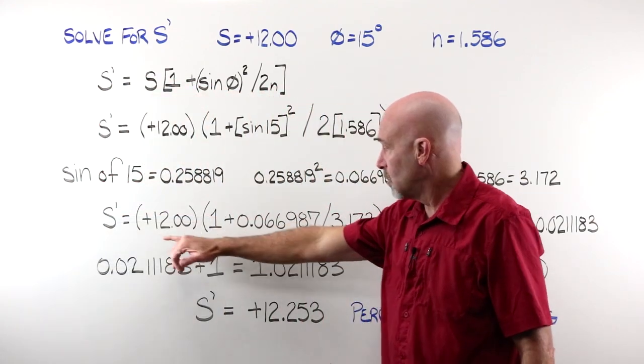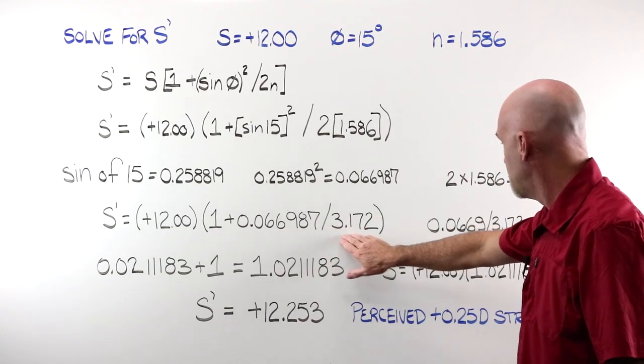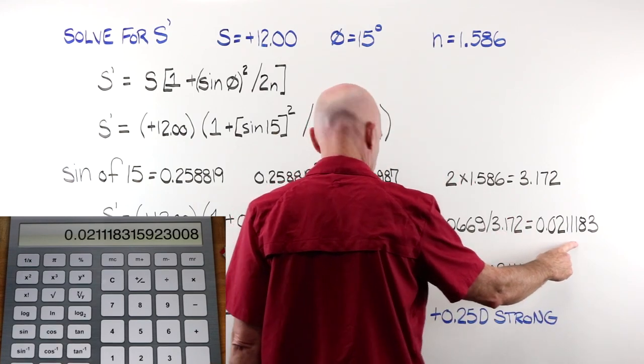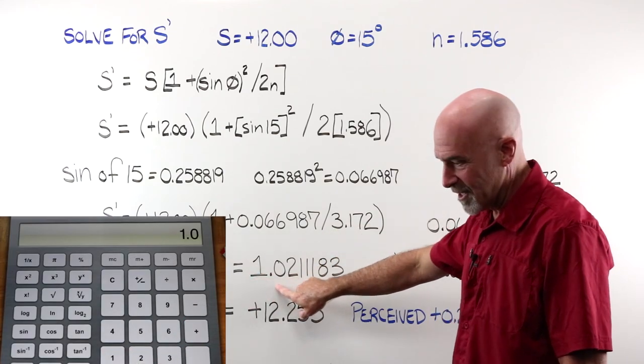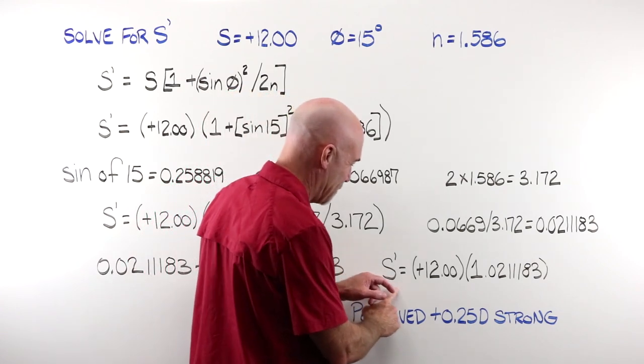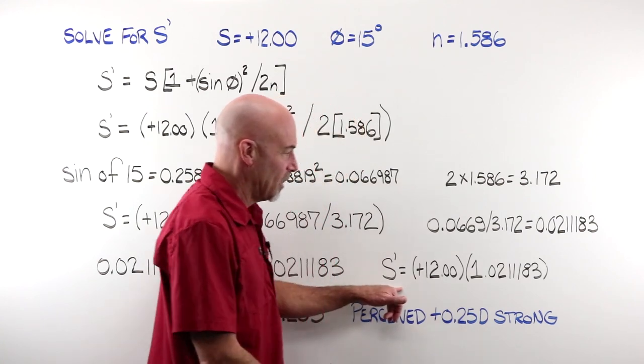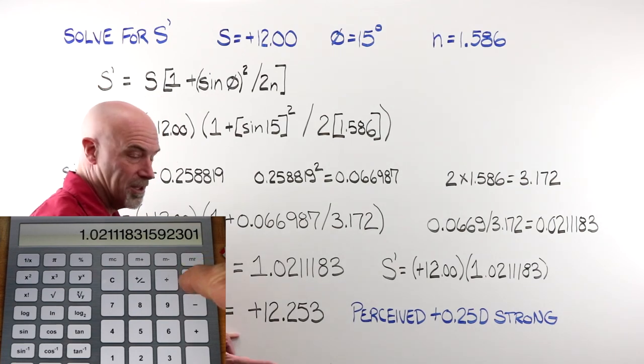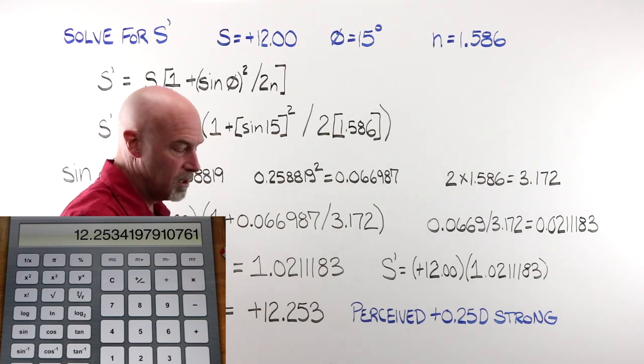Our new sphere power is equal to our old, multiplied times our one plus this divided by that. This divided by that equals that. That plus our one gives us this. And at last, we arrive at our new sphere power as being equal to our original sphere power, multiplied times 1.02. That gives us, plug it into a calculator, a new sphere value of plus 12.253.